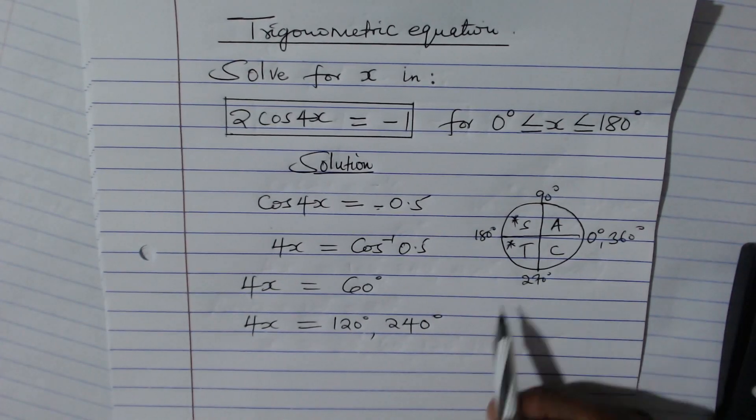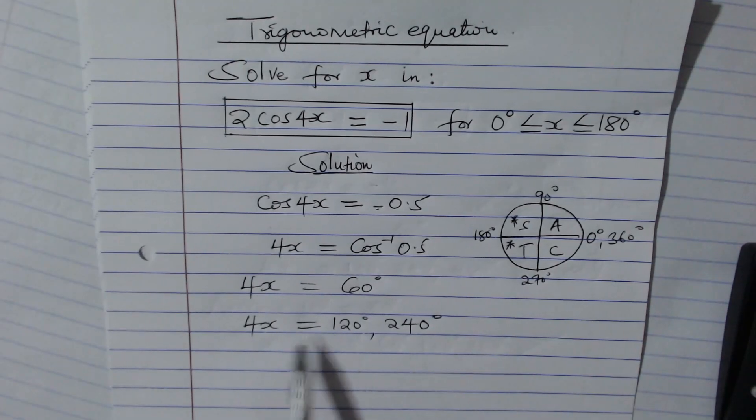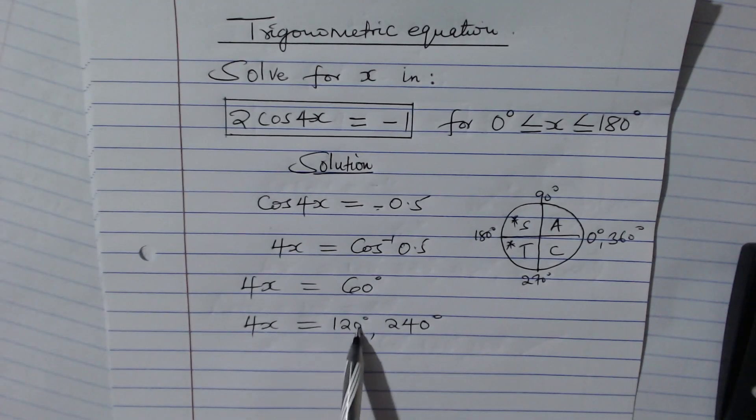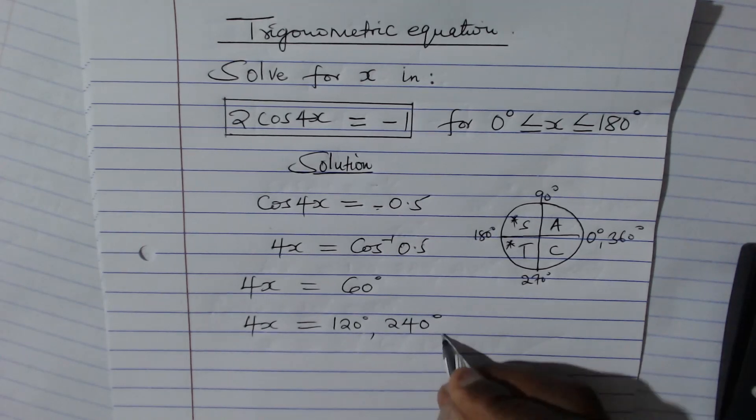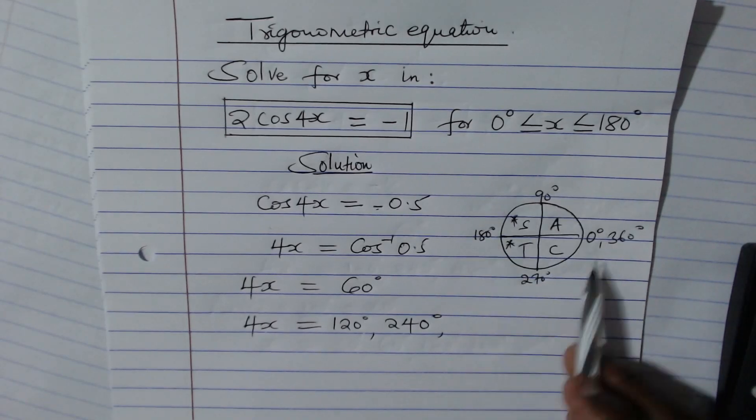And then, since we finally have to get x, we need to divide. 4x = 120, we need to divide all these by 4. So when we divide this by 4, we get 30. We need to go to the second round. That is the first round. The first round is up to 360.